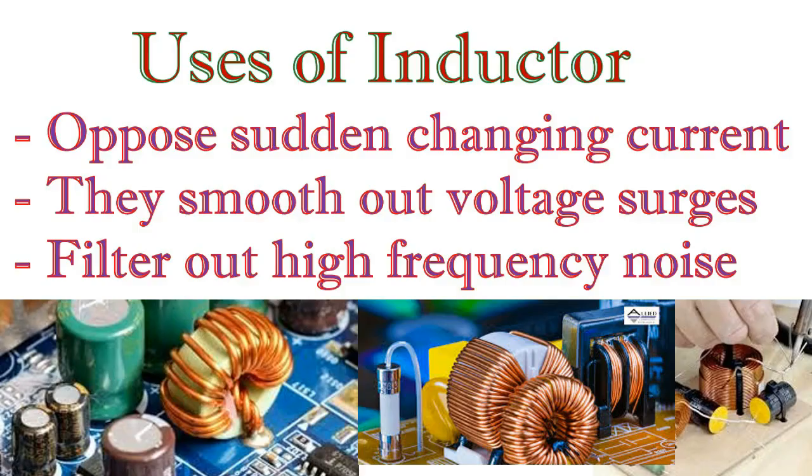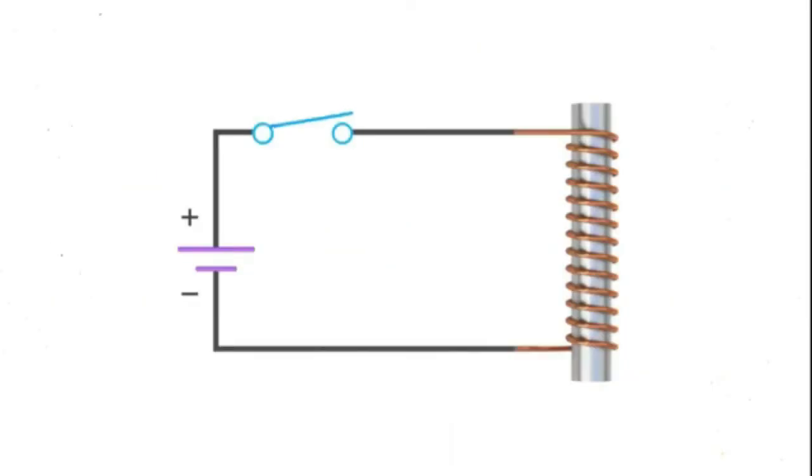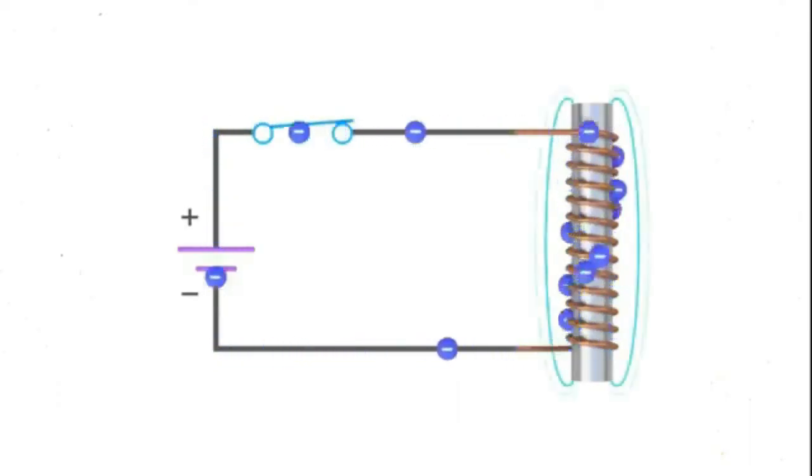Inductors oppose sudden changes in current, helping to smooth out voltage surges or filter out high-frequency noise. When current flows through the coil, it creates a magnetic field around it. The inductor stores electrical energy in this magnetic field.